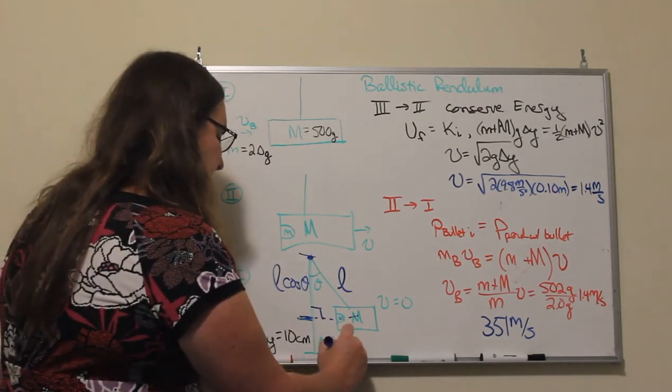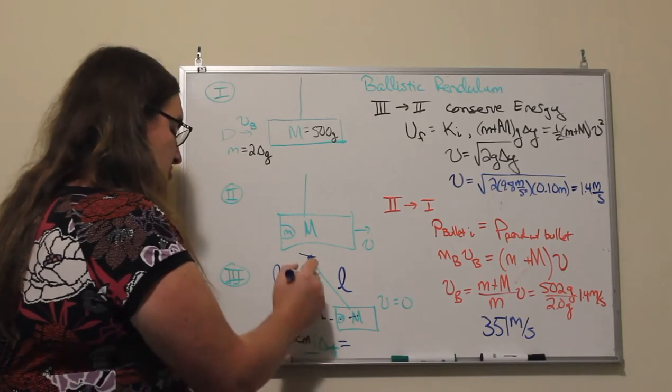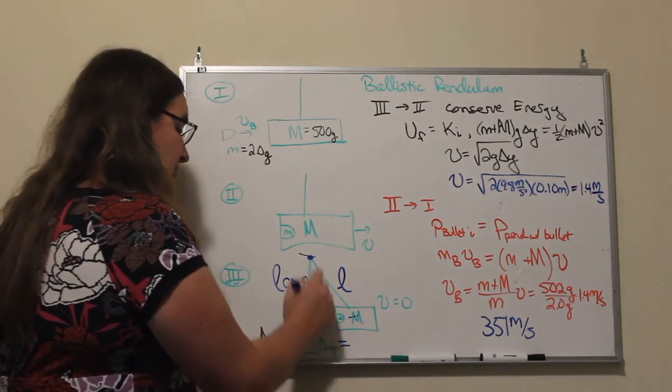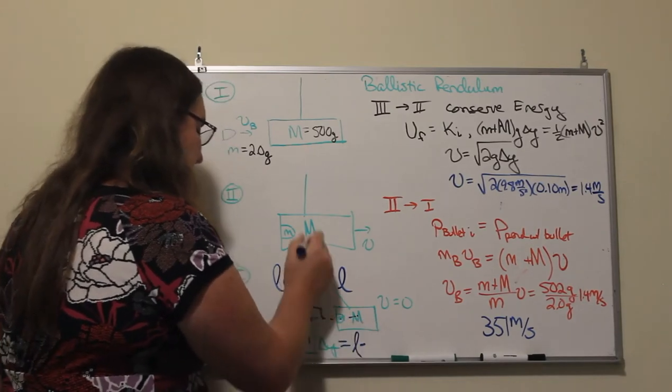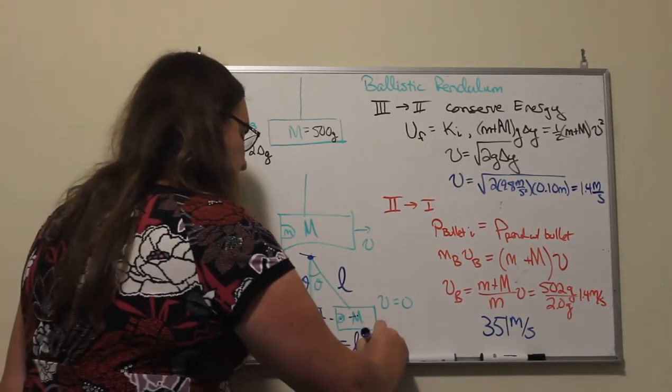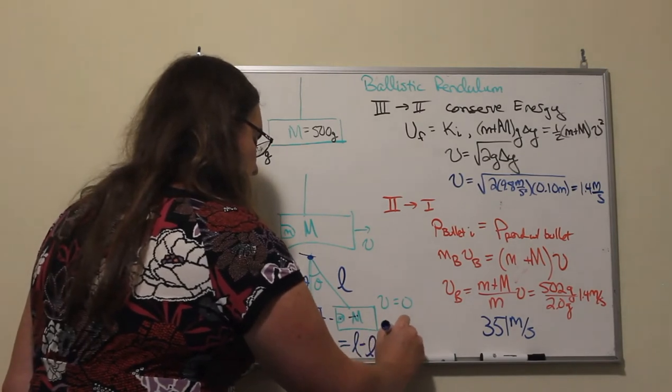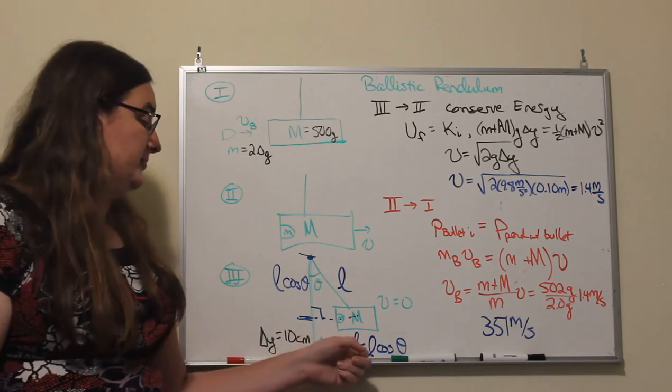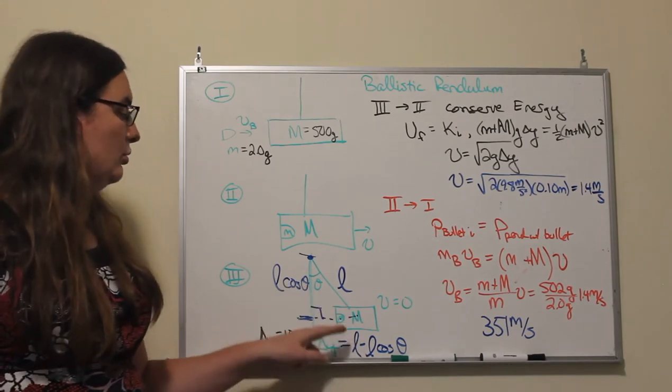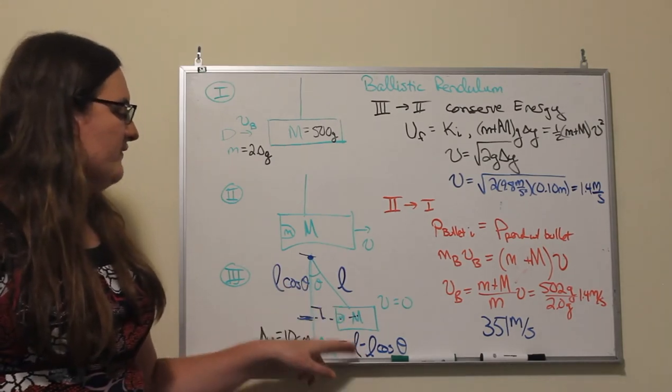So in terms of length, then, this change in height would be equal to the total length of the pendulum minus this adjacent component, the length times the cosine of theta.